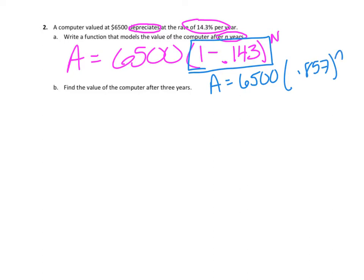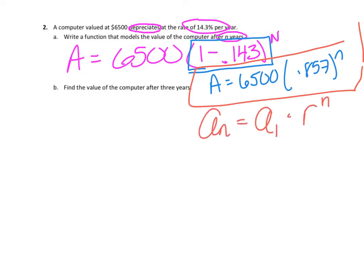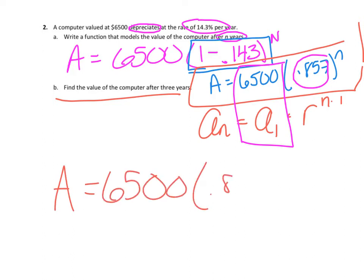Now, what do you have to take note of? This is similar to that geometric formula, where A sub N equals A sub 1 times the ratio to the N minus 1. Compare. There's A sub 1, the initial amount. We have our ratio to the N minus 1. Part B says, find the value of the computer after 3 years. I'm literally just going to plug 3 into my equation. So A equals 6,500 times 0.857 raised to the 3rd. Just plug and chug in your calculator. I get $4,091.25.